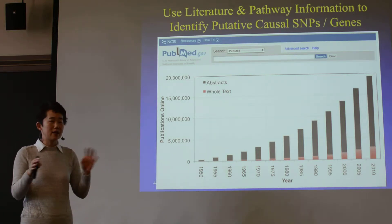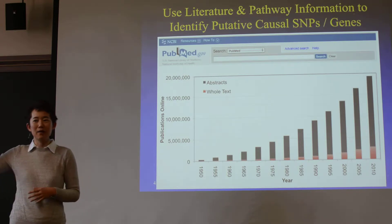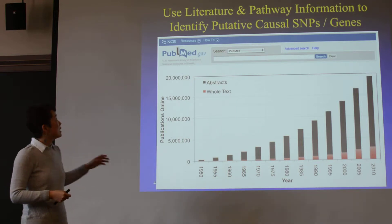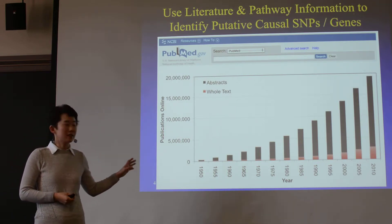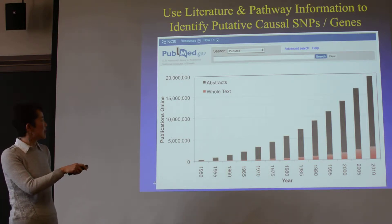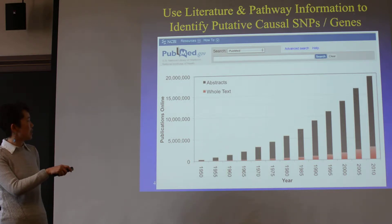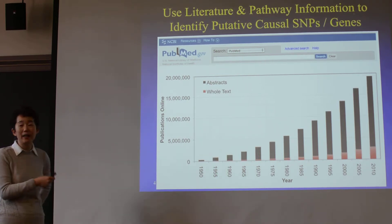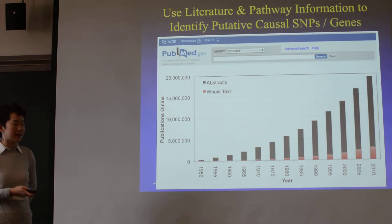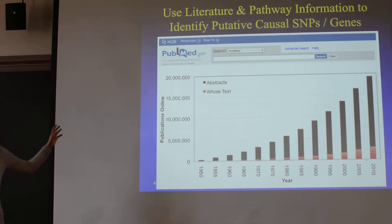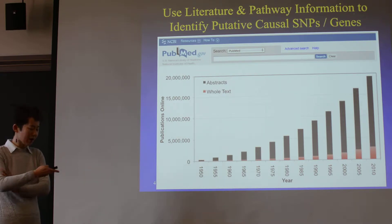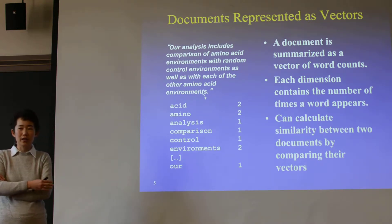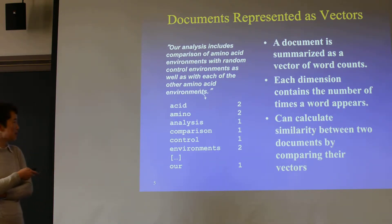For this, I want to mention one paper about how we use public information. This work was done by a classmate of mine, Shomori Choudry, now also a Harvard faculty member. He was looking at the literature — specifically, the list of papers published in the biomedical field. The red ones are the ones with full text available, so you can search for the content. We have more and more papers published, which is a big resource of knowledge.